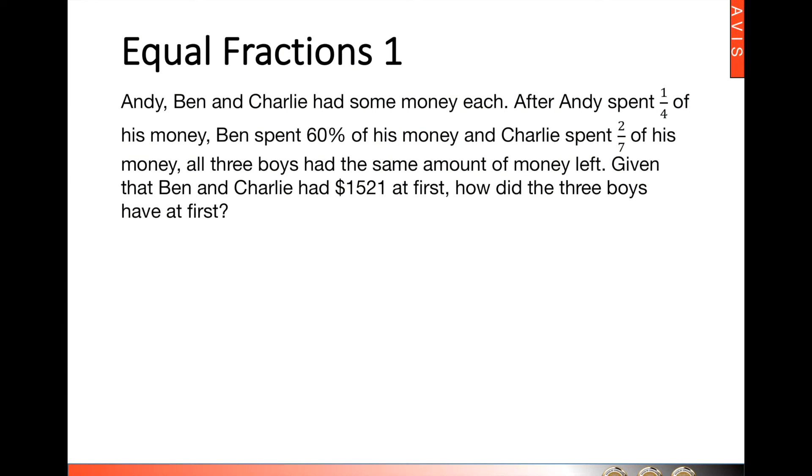Let's take a look at our equal fractions type 1. In this question, we are given three variables: Andy, Ben and Charlie. After Andy spent one-quarter of his money, Ben spent 60%, which could be converted into fraction, that would be three-fifths of his money, and Charlie spent two-sevenths of his money. All three boys had the same amount of money left. Let's use this information first.